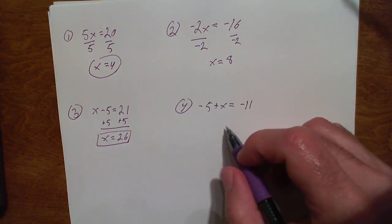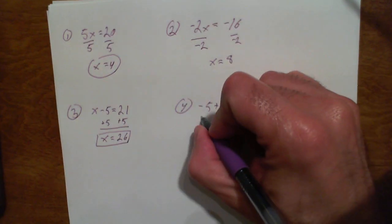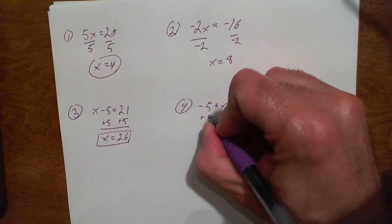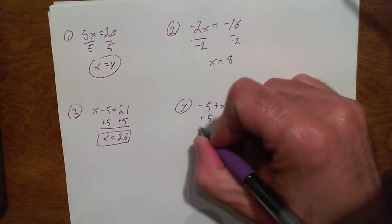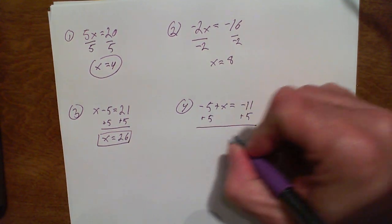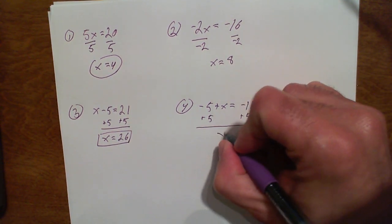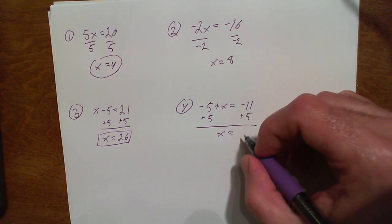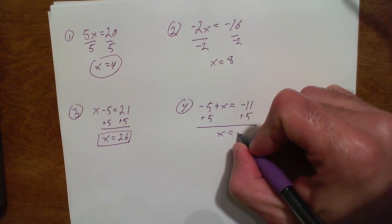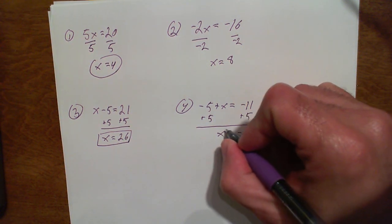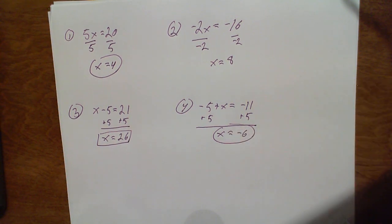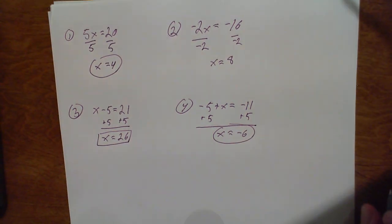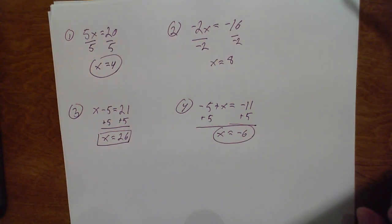And then negative 5 plus x equals negative 11. We add 5 on both sides and we get x equals negative 6. There's our warm-up. We need to know these basics before we go on to solving linear inequalities.